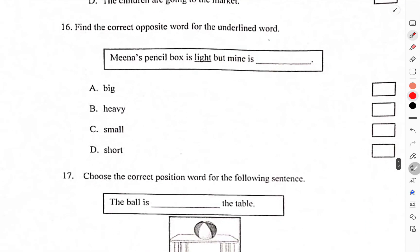Find the correct opposite of the underlined word light. Meena's pencil box is light but mine is heavy. Heavy is the opposite of light.